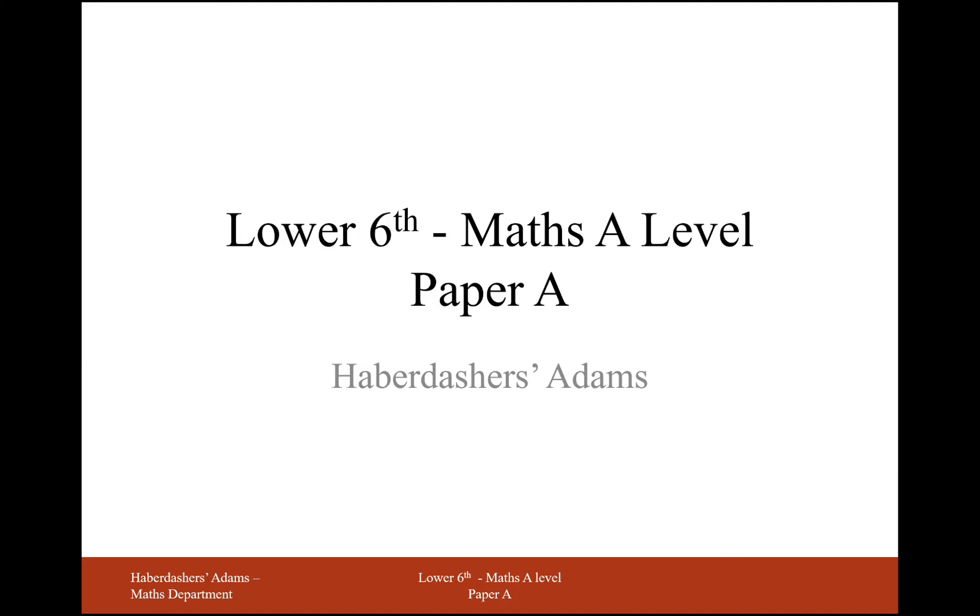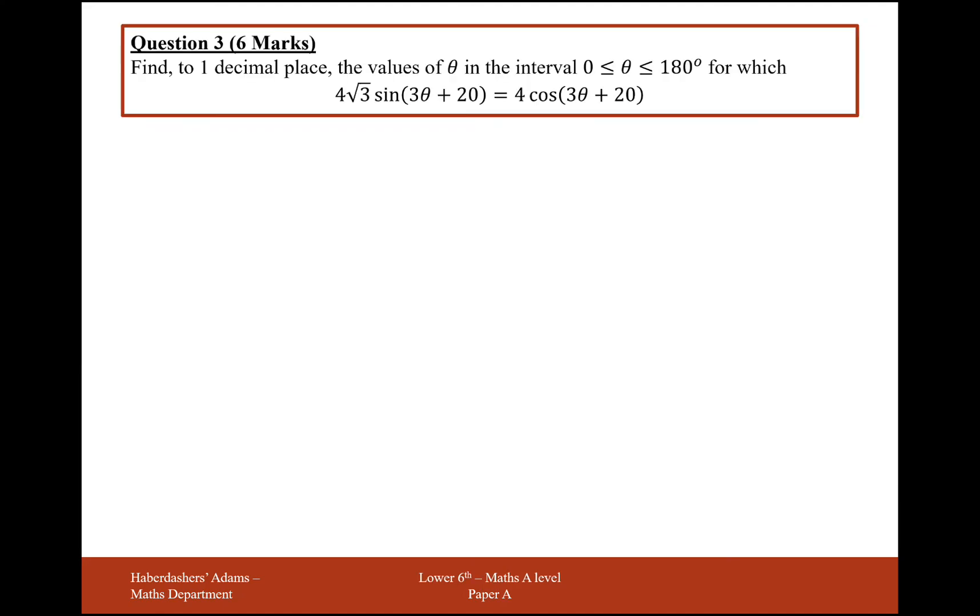Hello there, and welcome to lower 6 maths A level practice paper A. Here we're working on question 3, a trigonometry question. Find the value to 1 decimal place of theta in the interval from 0 to 180 of 4√3 sin(3θ + 20) equals 4 cos(3θ + 20).